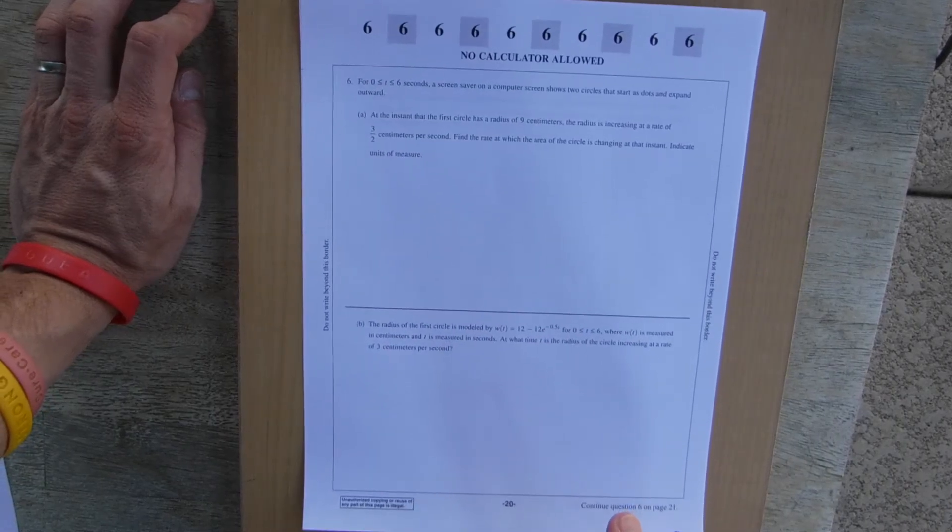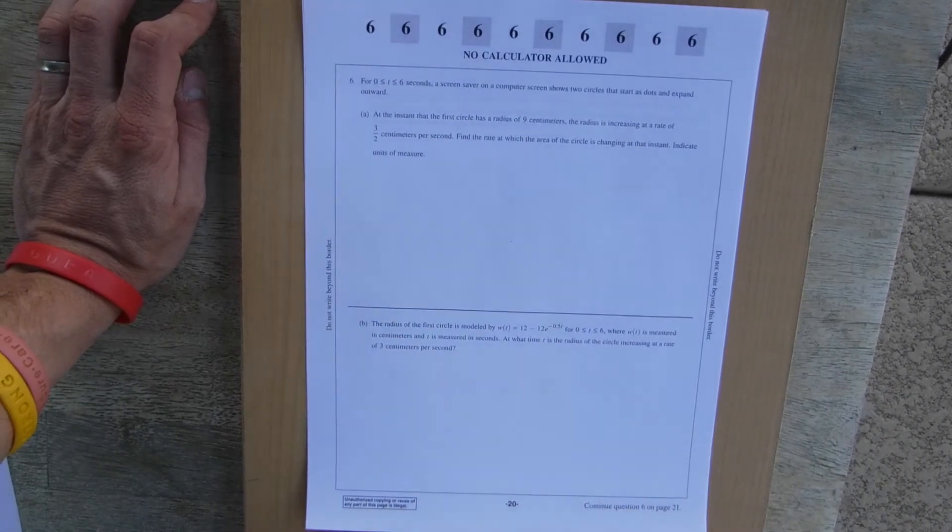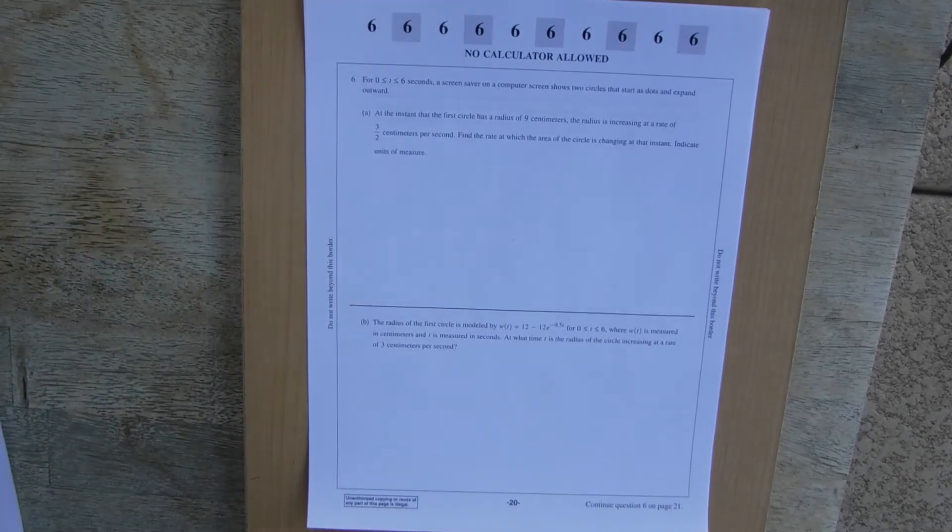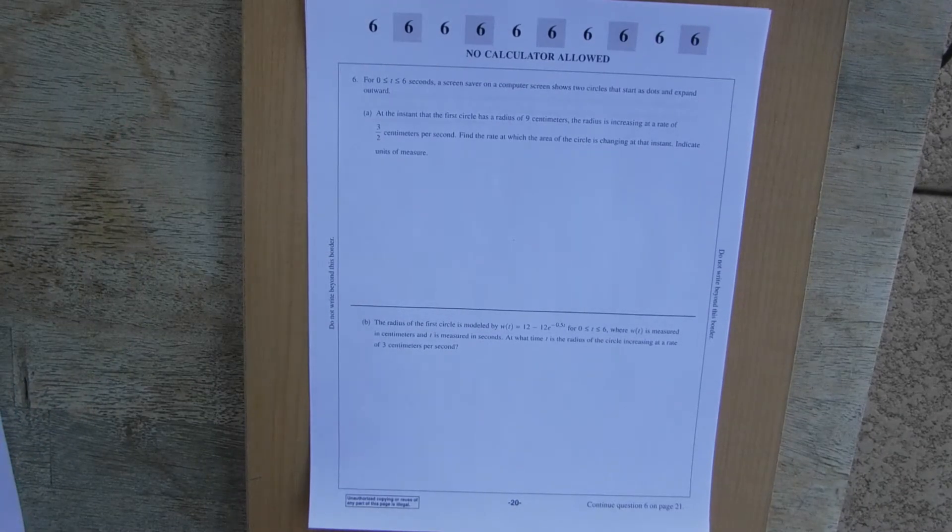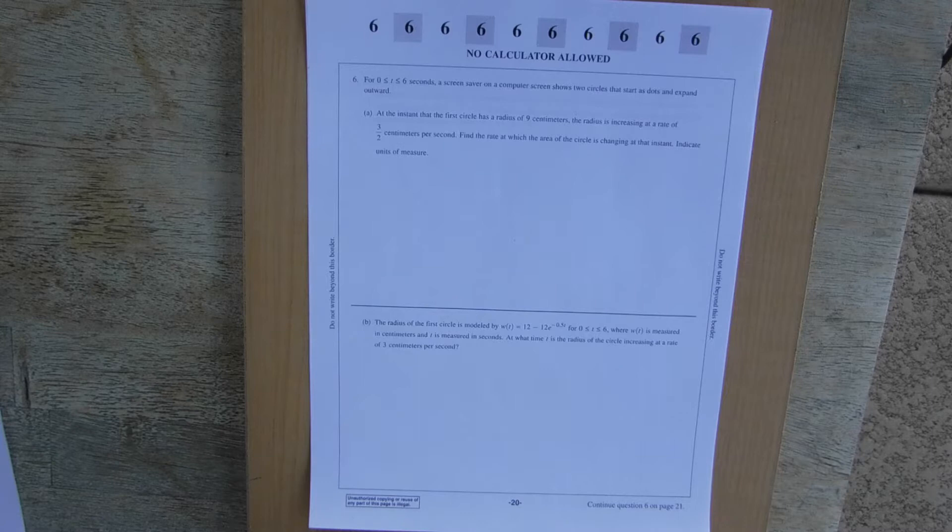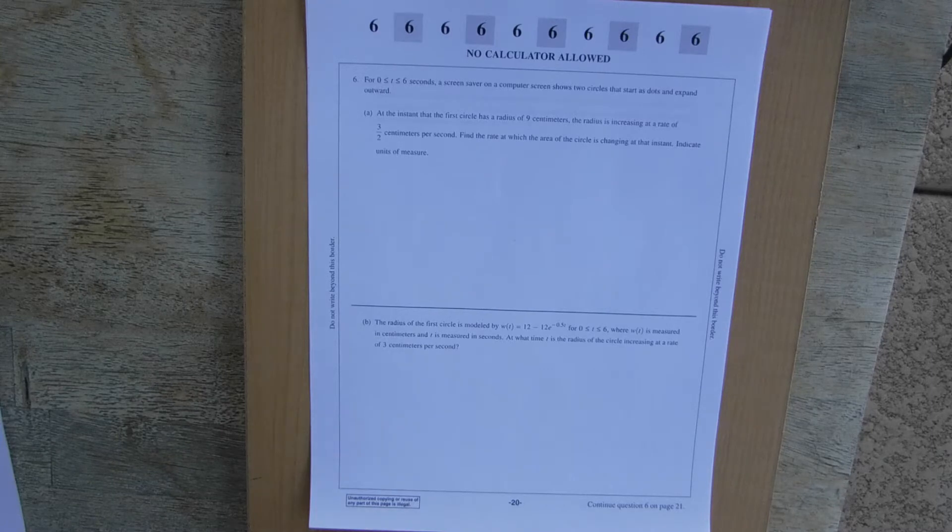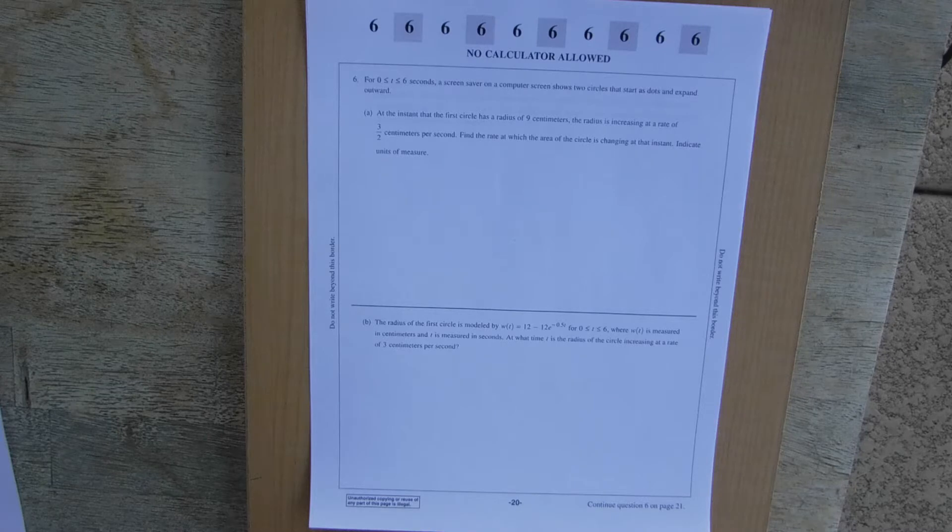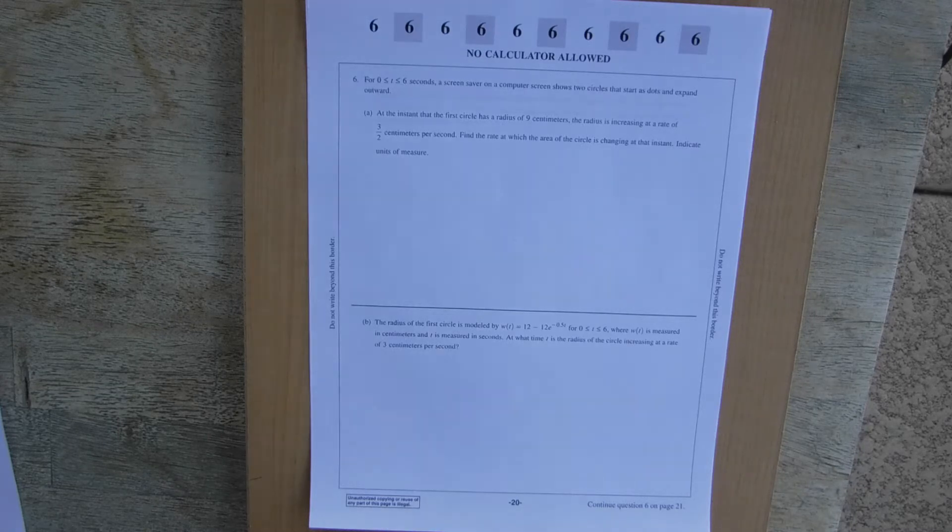Alright, here we go. We're going with the second video of this particular lesson. Again, this is AP Test 2017 Calc AB. This is number 6 of the FRQ. This is a non-calculator question. So let's go ahead and get started.